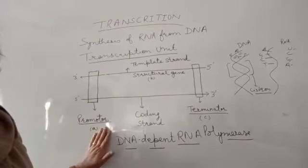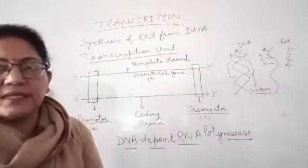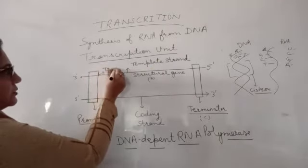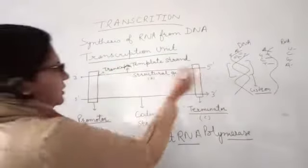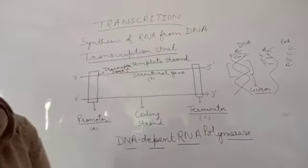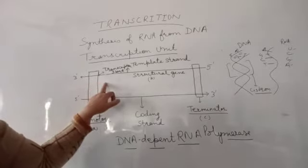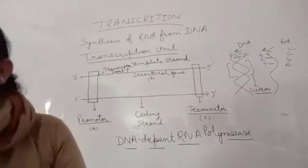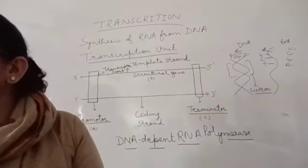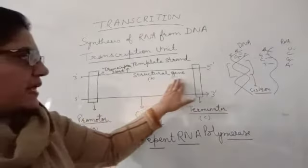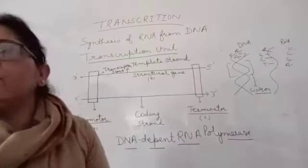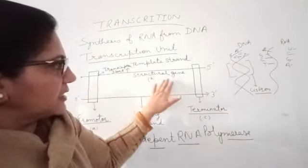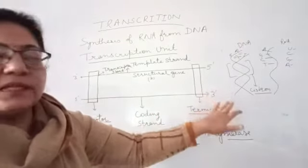So we have 3 units: the promoter unit, the structural gene unit, and the terminator. This is known as your transcription unit. The promoter is the binding site for RNA polymerase — it is where RNA polymerase binds with the help of a primer and transcription begins. Structural genes code for the polymerization of the RNA. The terminator is the end of the region where transcription comes to an end. So promoter is where transcription starts, structural gene is where polymerization of RNA occurs, and terminator is where it ends.